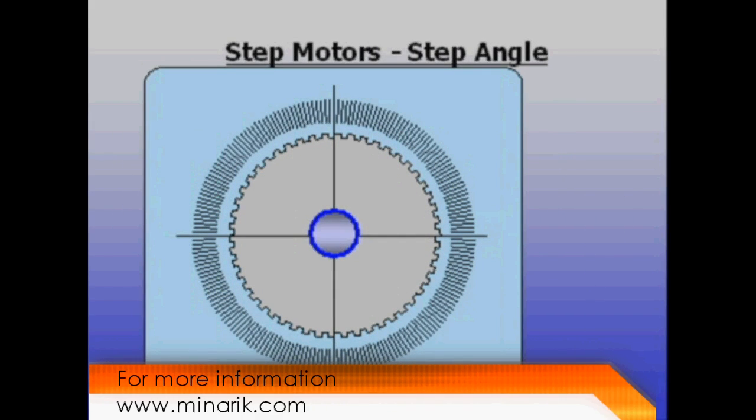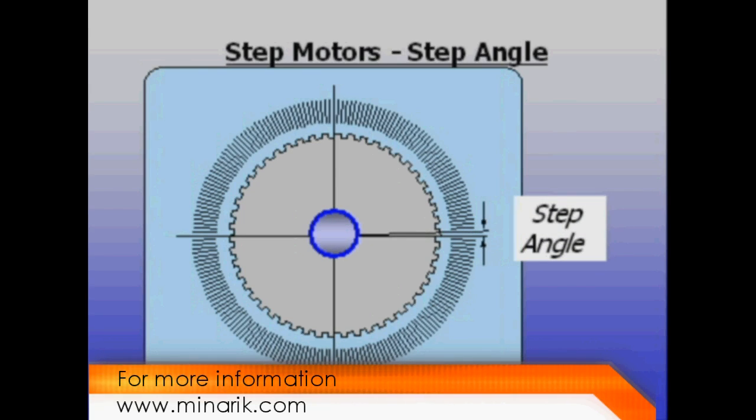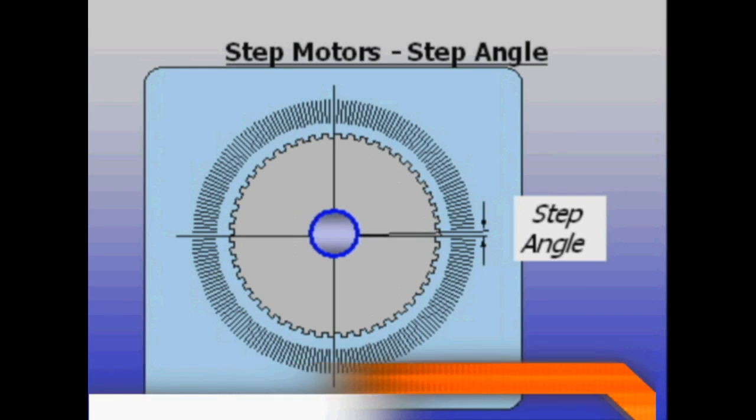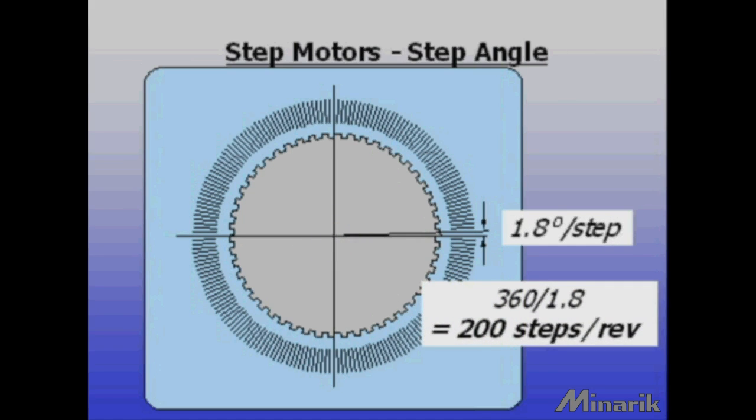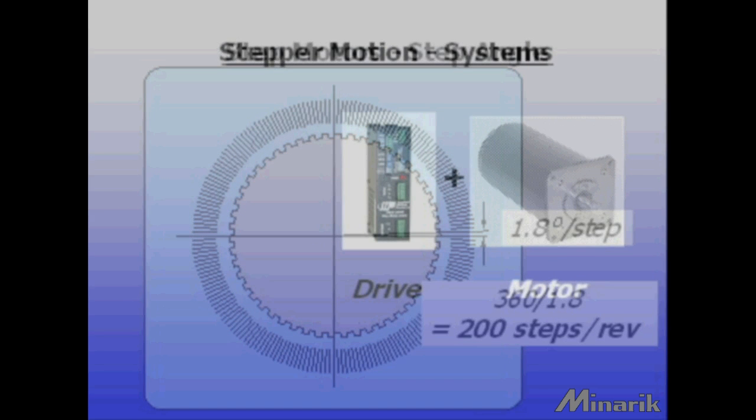If you grab a stepper motor shaft and turn it, you will feel natural stopping places or detents. The number of degrees of rotation from detent to detent is known as the motor step angle. Most industrial grade step motors have standardized on 1.8 degrees per step, or 200 steps per one revolution. This is a property of the motor and cannot be changed.